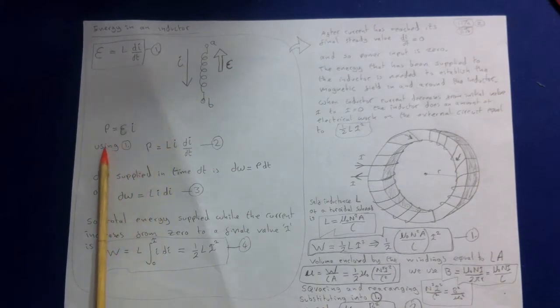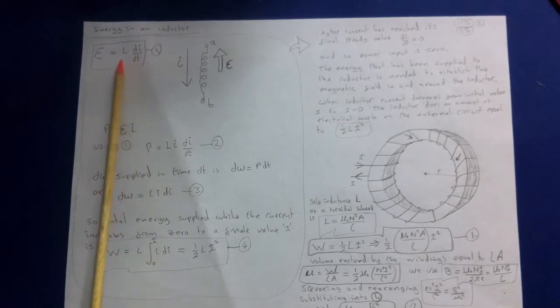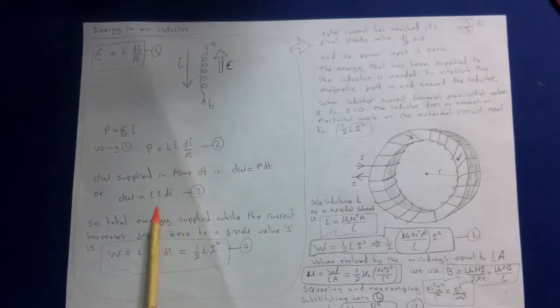Also, of course, power we know is the voltage times the current. Using the equation for the EMF, we can rewrite this now as power equals L I dI by dT.